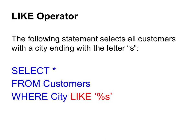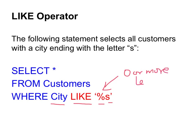With the LIKE operator we can search for different patterns in the data. For example, we can select all customers with a city ending with the letter S by writing: WHERE City LIKE '%S'. Since the wildcard character % represents zero or more letters, %S means all city names ending with the letter S. Note that the pattern %S is different from S%.